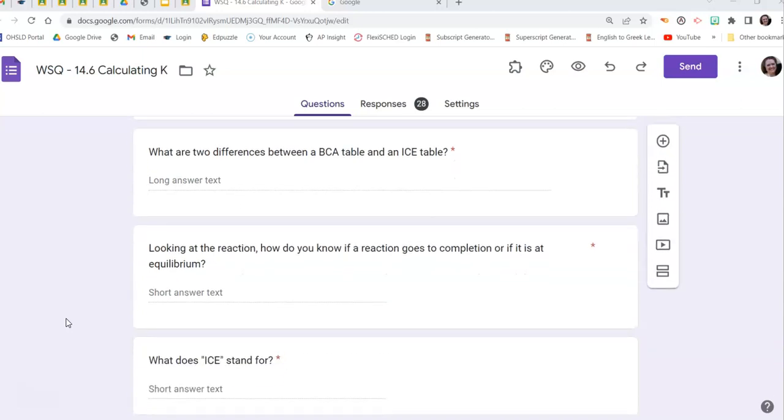Two differences between the BCA table and the ICE table. Number one is huge. Make sure you know it. BCA must be in moles. ICE must be in molarity. BCA goes to completion. ICE does not. It goes to equilibrium.